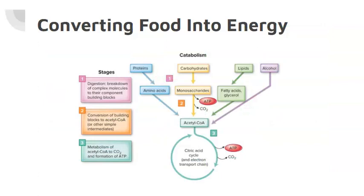The series of catabolic reactions, which produce energy and break molecules apart, begins with digestion and continues with monosaccharides, amino acids, fatty acids, glycerol, and alcohol. Energy is captured as ATP, and heat, carbon dioxide, and water is released. Adenosine triphosphate, known as ATP, is the main form of energy that our bodies use. The heat produced helps maintain body temperature.